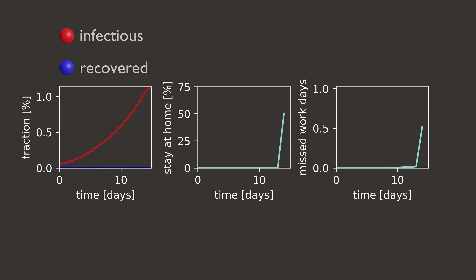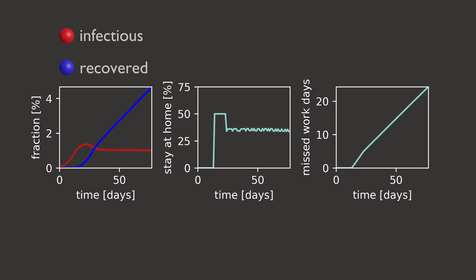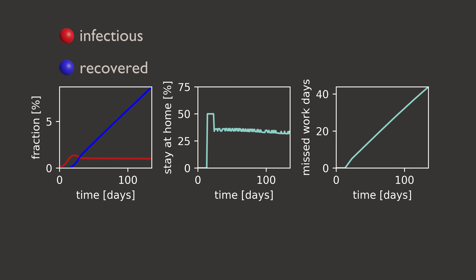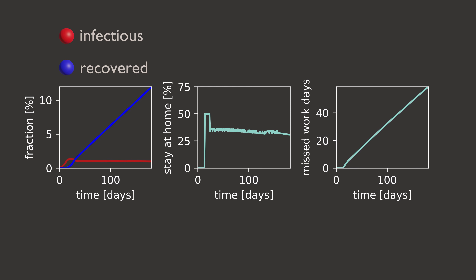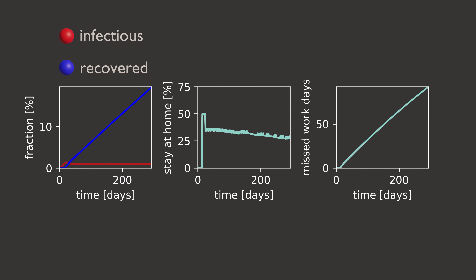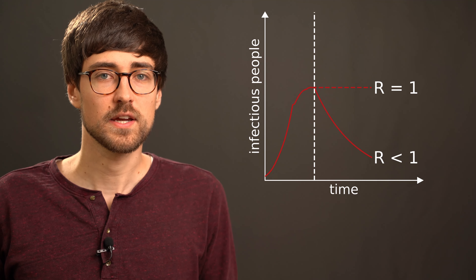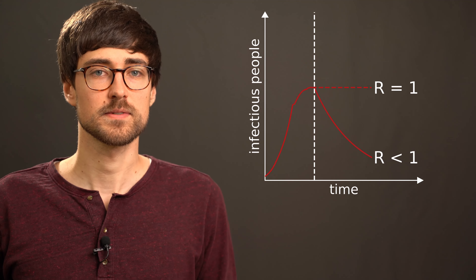Again 14 days into the simulation the government starts to react and orders marbles to stay at home. But in contrast to the previous model, the stay-at-home fraction is constantly readjusted to keep the fraction of infectious marbles at one percent. We can see that it takes considerably more time to build up immunity in the population. 200 days into the simulation it was possible to slightly reduce the stay-at-home fraction due to growing immunity, but that is really only a minor effect, and even a year after the outbreak we are nowhere near herd immunity.